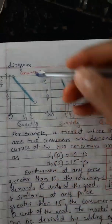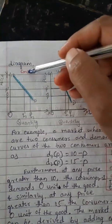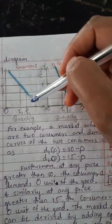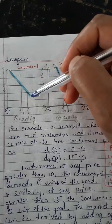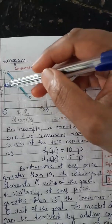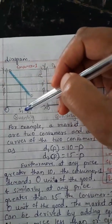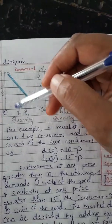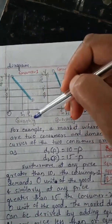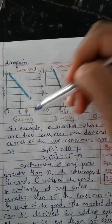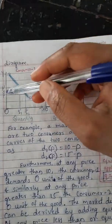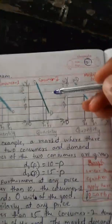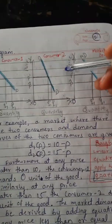This is the demand curve of consumer one. The quantity demanded varies with the price. We know that when price increases, quantity decreases; when price decreases, quantity increases. The demand curve depends on price variations. That is the demand curve for consumer one.